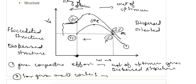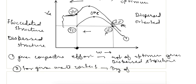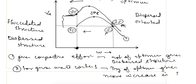So one key point is: dry of optimum gives a greater increase in gamma d when compactive effort is increased.